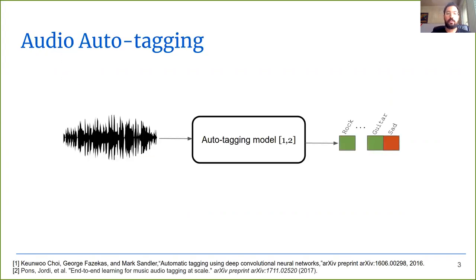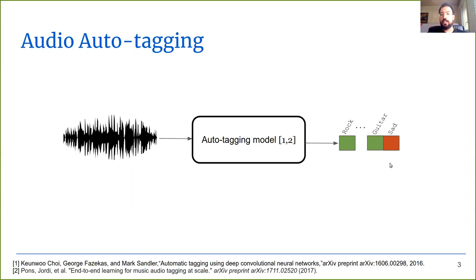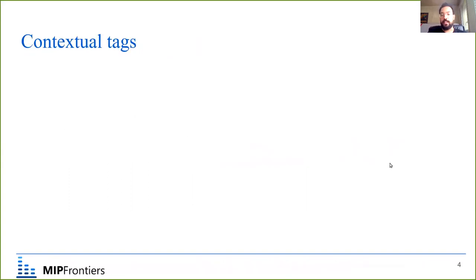Auto-tagging is the problem of tagging a given audio track with the corresponding correct tags. The audio track could be in a raw audio format or as a pre-computed mel-spectrogram. We train an audio auto-tagging model to predict the correct tags, which could be genre, instruments, or moods, among many other things. In our case, we focus on contextual tags.